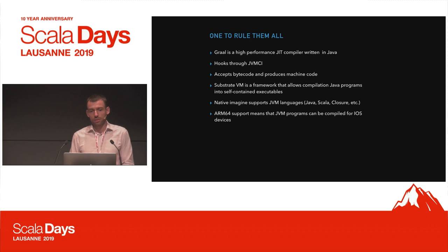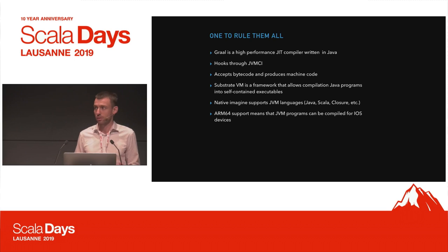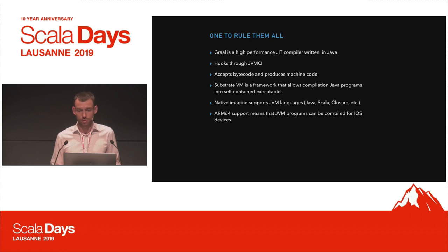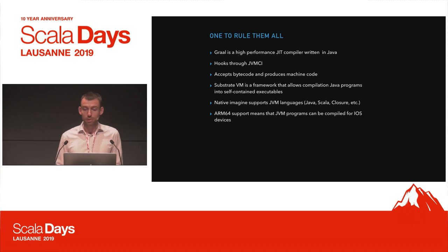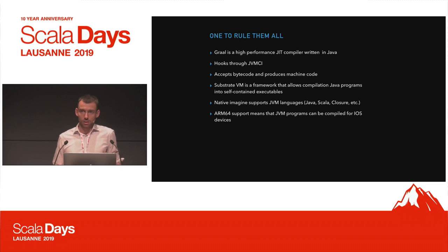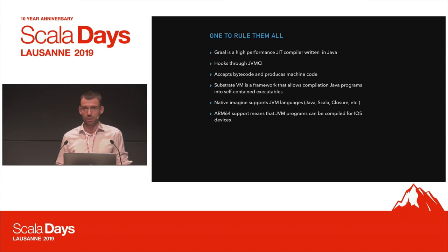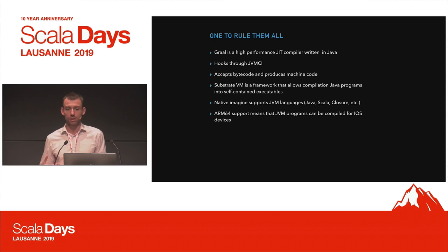Another option is to turn towards technologies such as GraalVM. GraalVM is a high-performance JIT compiler written in Java that hooks through the JVM-CI interface. On top of that, you have Substrate VM, which allows compilation of Java programs into self-contained executables. The native image support can work with JVM languages like Java, Scala, and Clojure. Because ARM64 support is currently being worked on, you can pretty much write code in Java and run it on iOS.